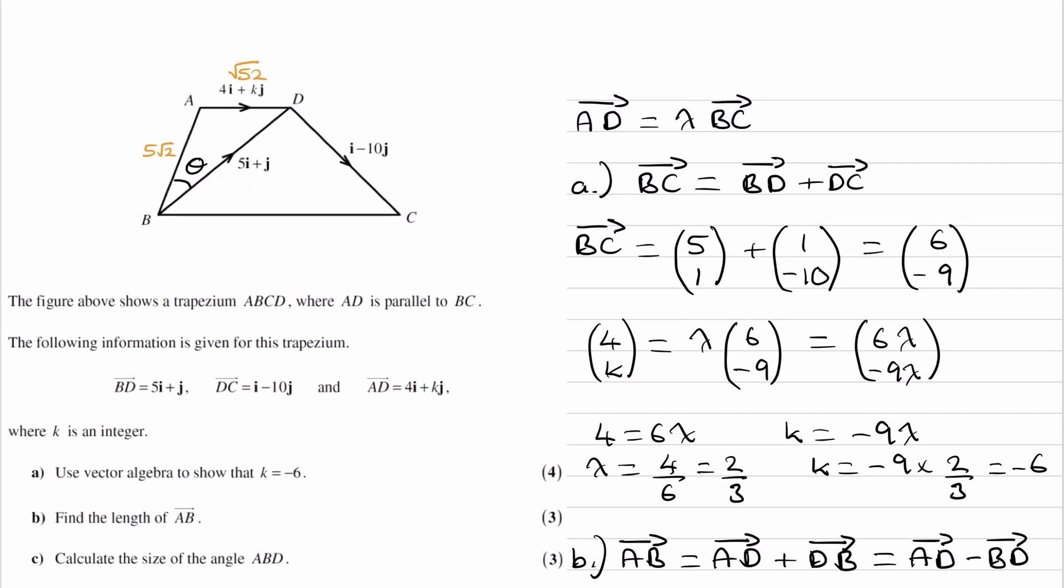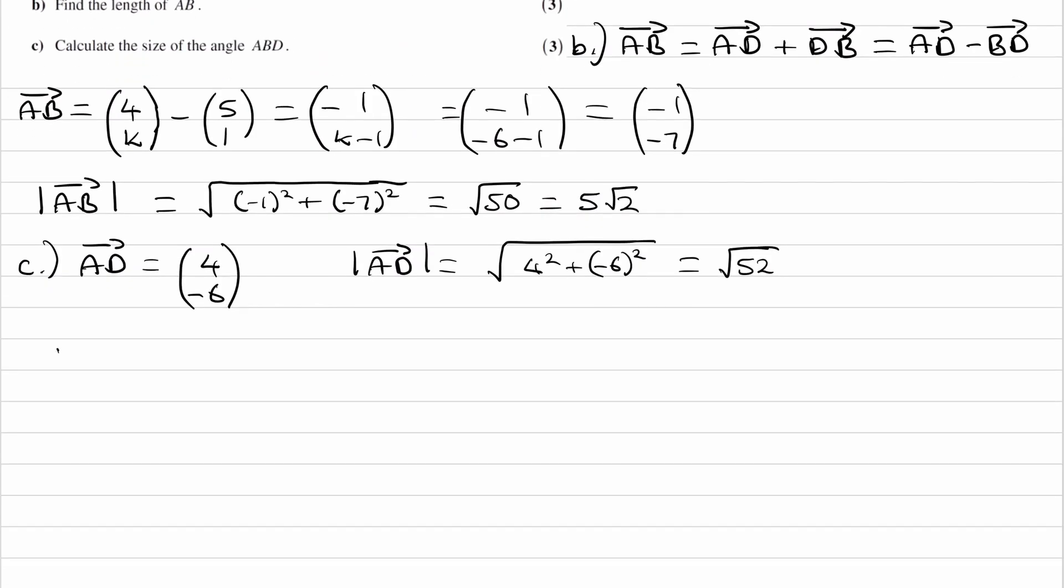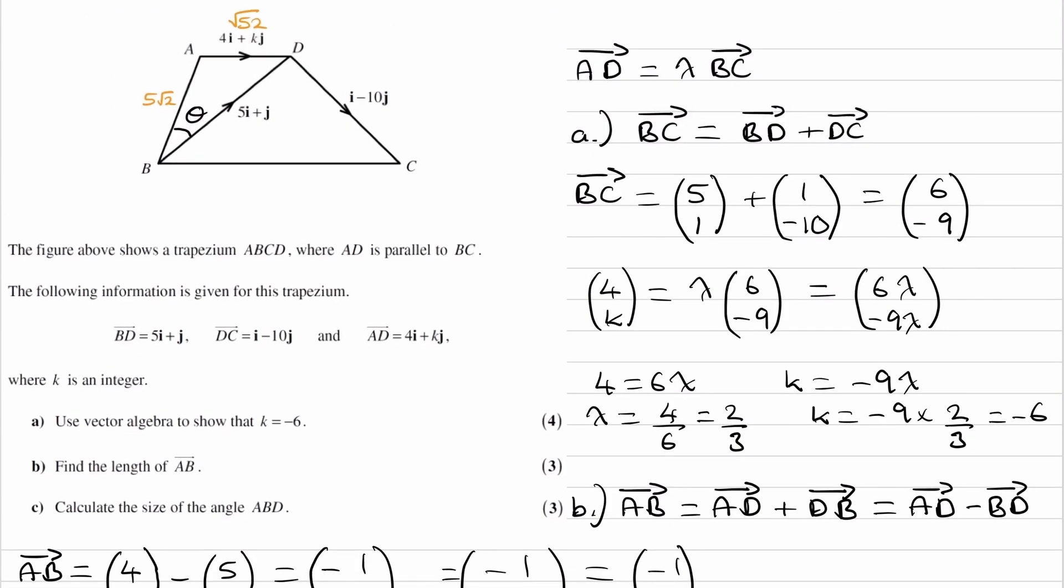The final one is the 5, 1. So 5i plus j. That's BD. So BD is 5, 1. The magnitude of BD square root 5 squared plus 1 squared, which is root 26. Put that on our diagram. This is root 26.